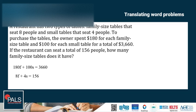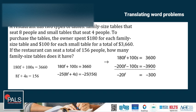Because the question asks for the number of family-sized tables, you will save time by eliminating S, because we just need the number of family-sized tables. To eliminate S, we need to multiply the second equation by 25. This gives us these equations: 180F plus 100S is equal to $3,660. Negative 25 times 8 is negative 200F, negative 25 times 4 is negative 100S, negative 25 times 156 is equal to negative $3,900.